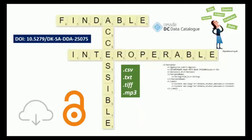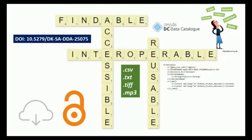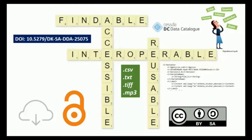All these aspects make data reusable. A licence should describe how the data can be used and whether conditions apply. Remember that FAIR data is not the same as open data. Provenance information also helps for reuse.